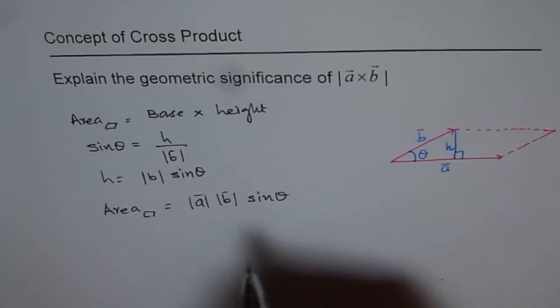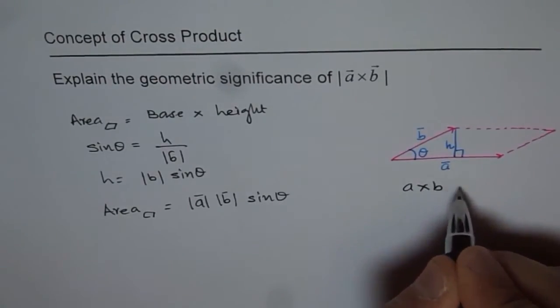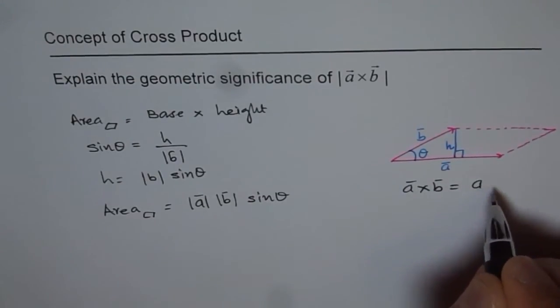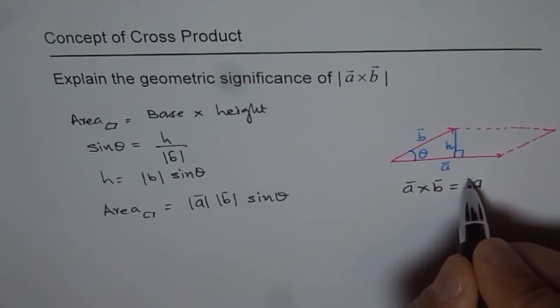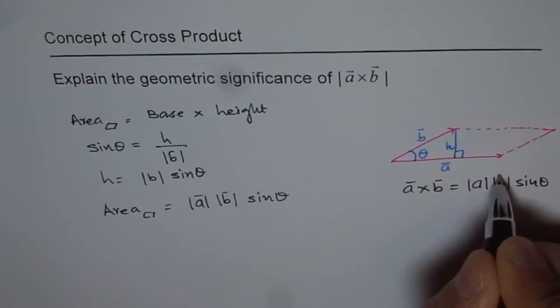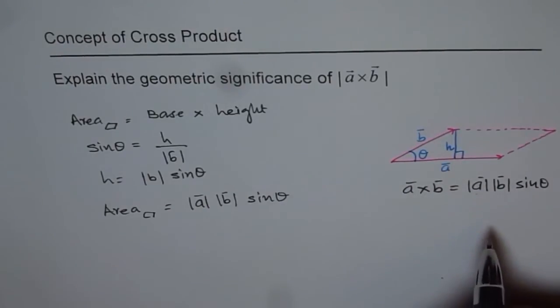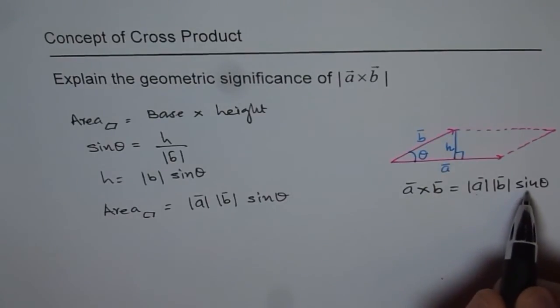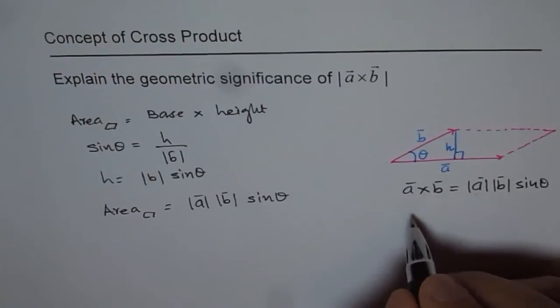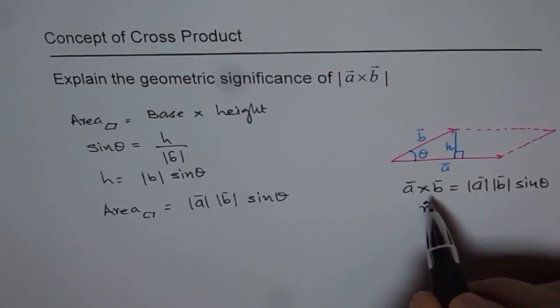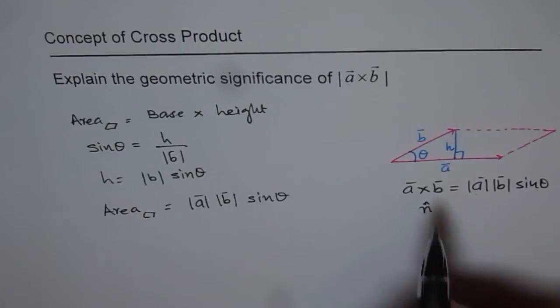And by definition, what is A cross B? Vector A cross B is actually A, B sine theta. A cross B is also magnitude of A, B sine theta. And the direction is normal. Direction is normal to both A and B. So that is A cross B, a vector quantity.